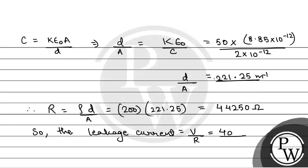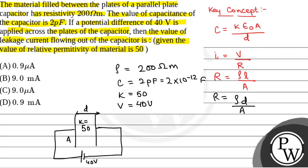Current I will be equal to V divided by R, which will be equal to 40 volt divided by 44,250 ohm. On solving this, it will be approximately equal to 9 into 10 to the power minus 4 ampere, that is equal to 0.9 milliampere. So the leakage current will be equal to 0.9 milliampere, which is option D. So this will be the correct option.